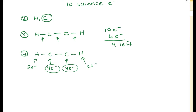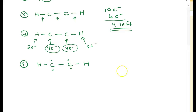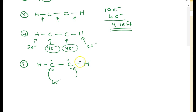We have four electrons left to redistribute. We don't want to put any on hydrogen since those are already satisfied. If we distribute these four electrons equally — placing two lone electrons on each carbon — let's check: for each carbon atom, we have two from the bond to hydrogen, two from the bond to the other carbon, plus two lone electrons, giving us six electrons total. We're still not at eight, so we're not happy yet.